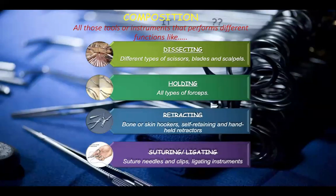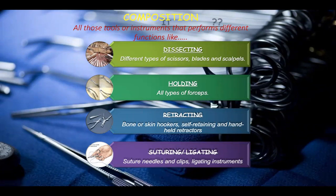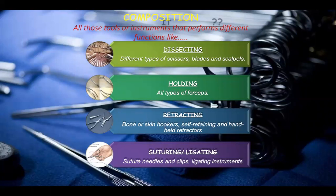The composition of surgical supplies covers all tools or instruments that perform different functions: dissecting, holding, retracting, suturing, and ligating. First, the surgical site is dissected and opened, then held with forceps, retractors are used, and then suturing and ligation are performed — stitches are done with suture needles, and ligating instruments are applied.